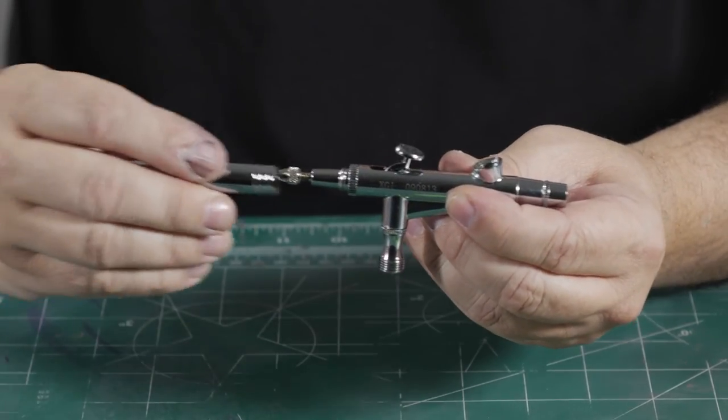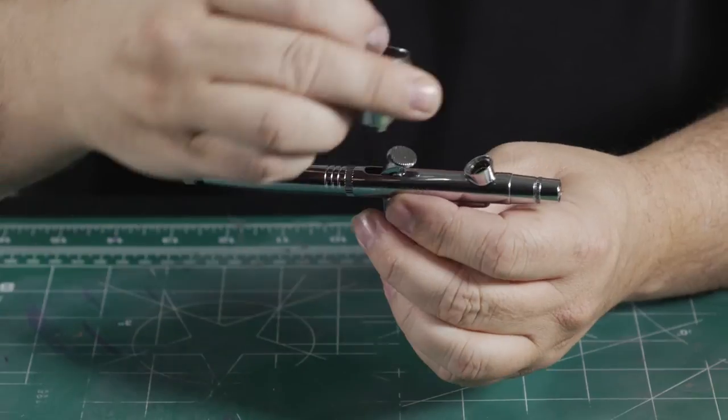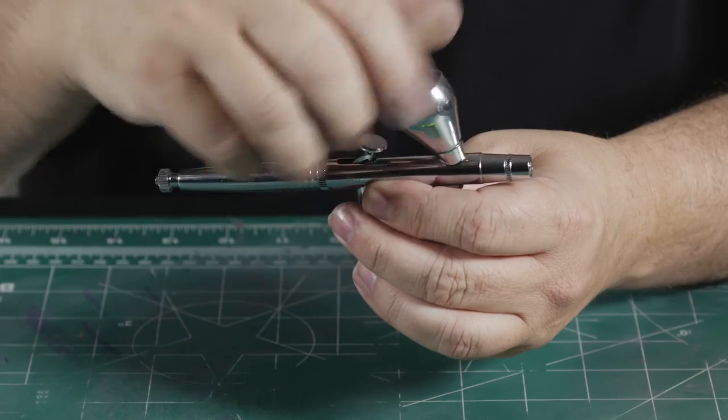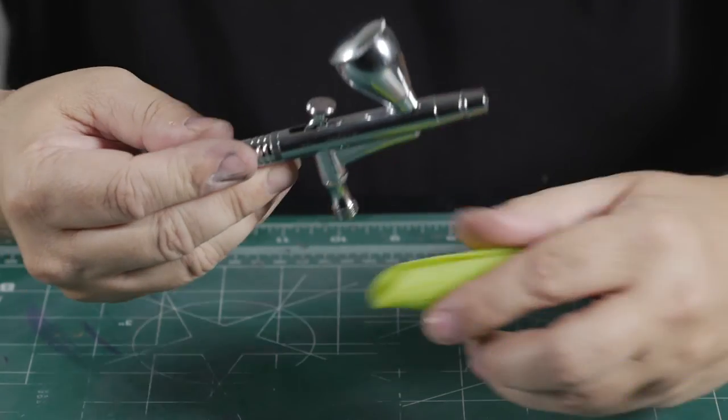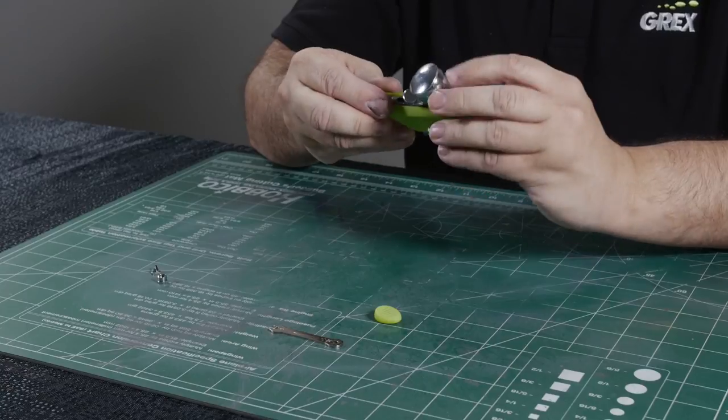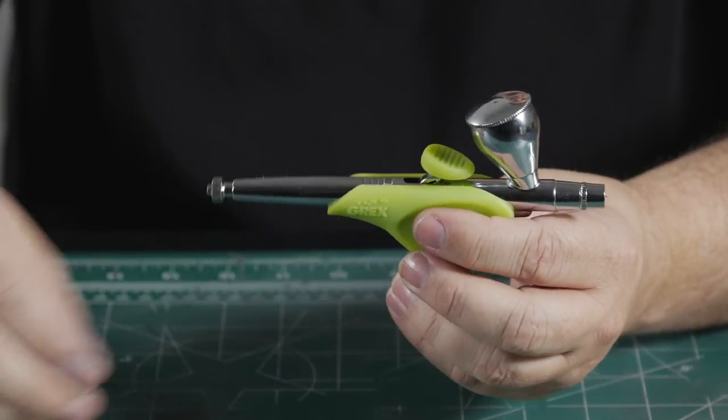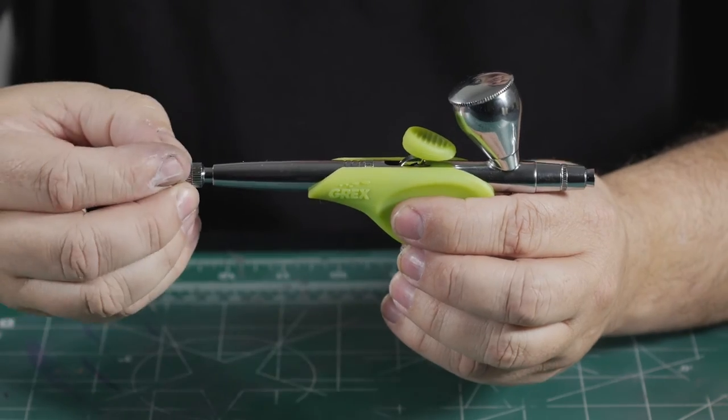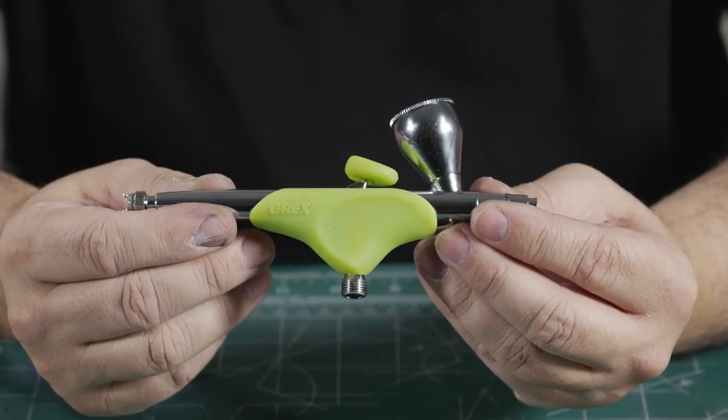Next, we can put the handle on. We'll put the color cup on along with the cover. Now we can put the grips back on the airbrush. They just start right over the valve assembly along with the trigger pad. And then lastly, we have the magnetized nozzle and consequently the crown, which either one could go fore or aft. So now we have reassembled the Genesis XGI airbrush.